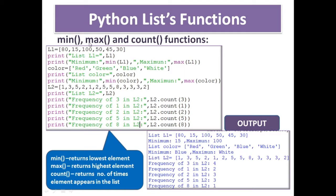Here we have three aggregate functions: min, max, and count. Min returns the lowest element, max returns the highest element out of the list elements, and count returns the number of times a particular element appears in the list. For L1 with elements 80, 15, 100, 50, 45, 30 — printing min and max gives: minimum is 15 and maximum is 100.